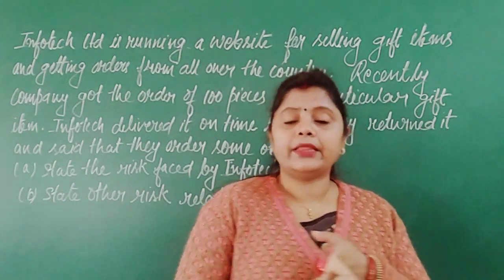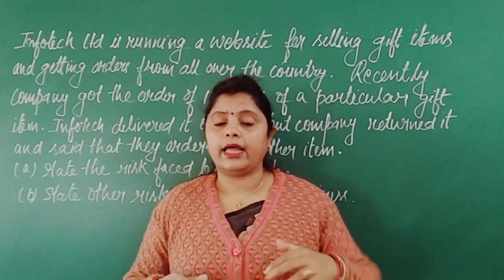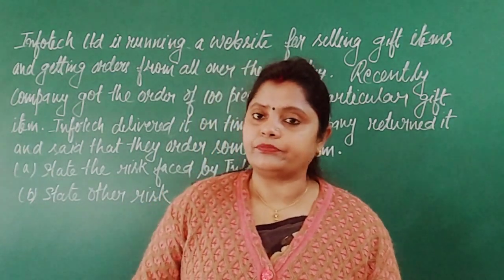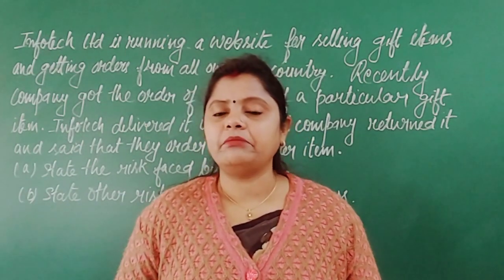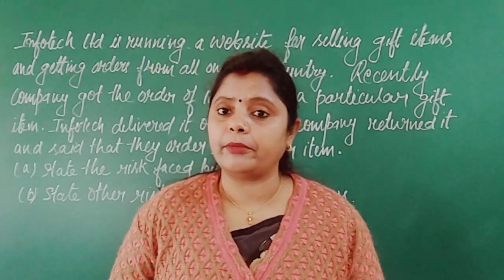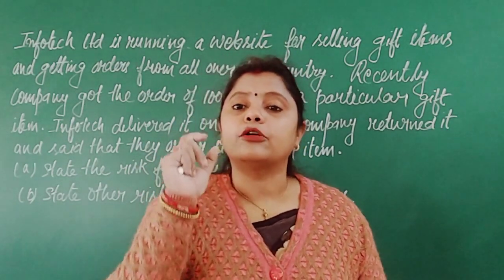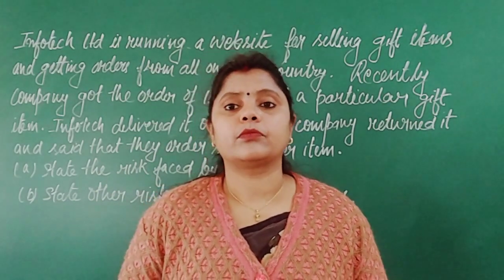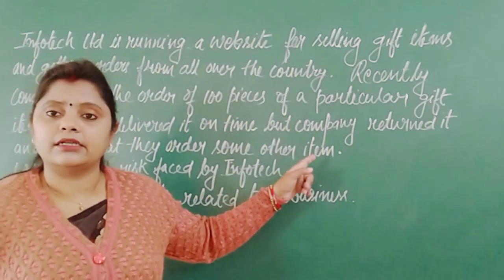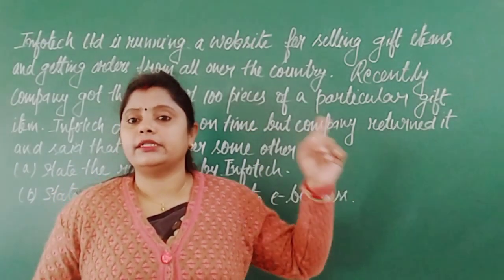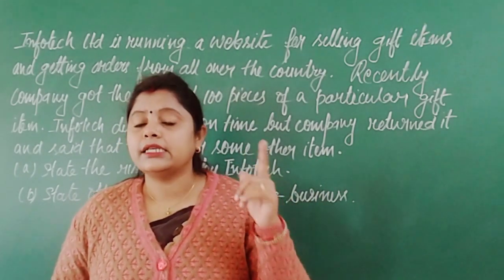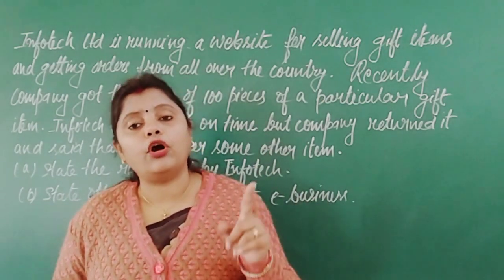Default on order means the customer will deny that they placed the order, or the seller will deny that they received it — it is about the placement and receipt of the order. Default on payment means the seller says they have not received the payment while the purchaser says they have made it. Default on delivery means goods may be delivered to some other place, or whatever was ordered, something else is delivered. That is exactly this case — the company which placed the order is claiming that what was delivered is not what they ordered, which is why they returned it.